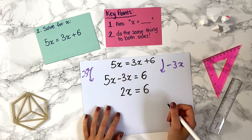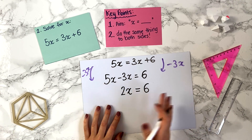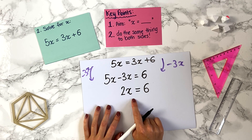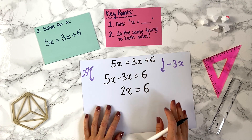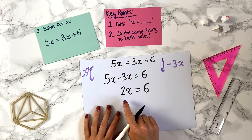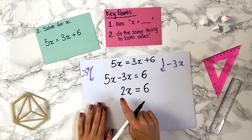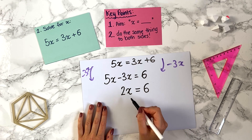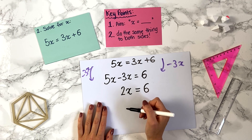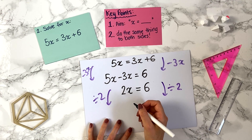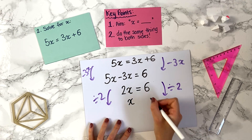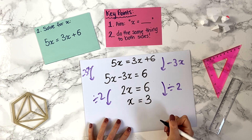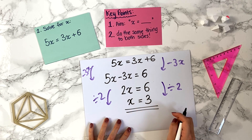We've got x's on one side and numbers on the other, which is a good stage. But we want x on its own — currently we have 2 times x equals 6. To get rid of the 2, we divide the left-hand side by 2, and we must divide the right-hand side by 2 as well. That gives x on the left, and 6 divided by 2 is 3. So x equals 3.